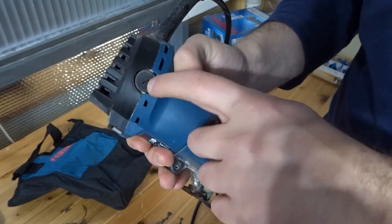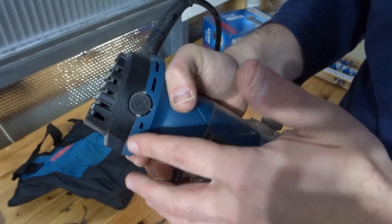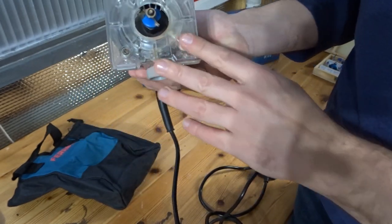There's an opening here. I assume that is for when you need to change the brushes in the machine. And there's a plate on the bottom here.